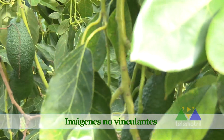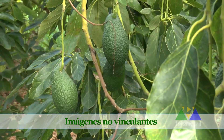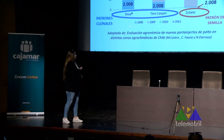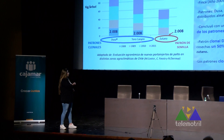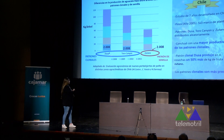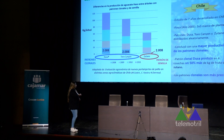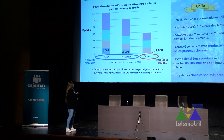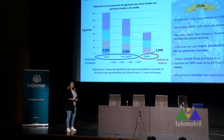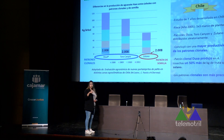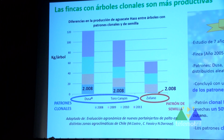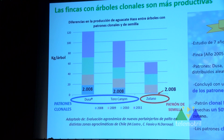Vamos a hablar de producción. Las fincas de aguacate clonal son más productivas. Este estudio se realizó en Chile, un país muy actualizado en el cultivo del aguacate. Se comparó la producción de variedad Hass sobre patrón Dusa, patrón Toro Cañón y patrón Zutano —Zutano es el de semilla, Dusa y Toro Cañón son clonales—. Lo llevaron a cabo profesores y doctores de la Universidad de Valparaíso. Se concluyó que la variedad Hass sobre patrón Dusa produjo aproximadamente un 50% más que sobre el patrón Zutano de semilla, y además en el primer año de producción Dusa ya produjo unos 20 kilos por árbol mientras que Zutano prácticamente no tenía producción visible.